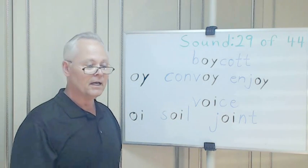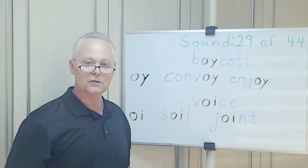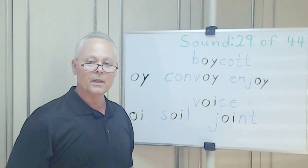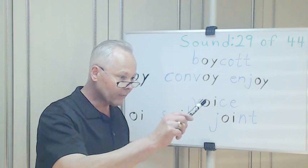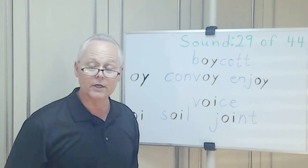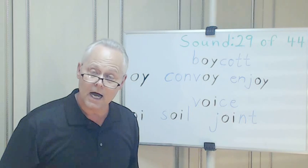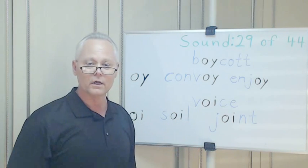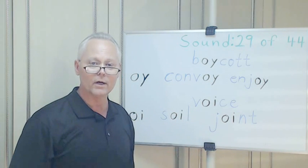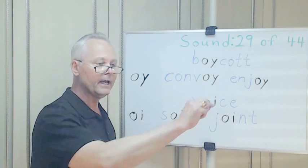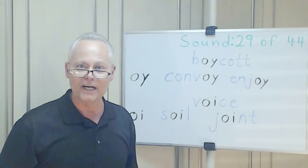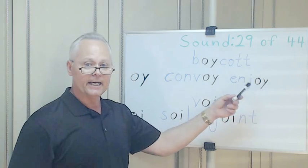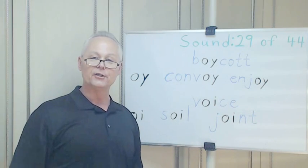Convoy. If you see some military vehicles going down the road in a line together, one right after the other, they're probably in what you call a convoy. And they cannot deviate from that course — they must stay one behind the other from point A to point B. It's a convoy.